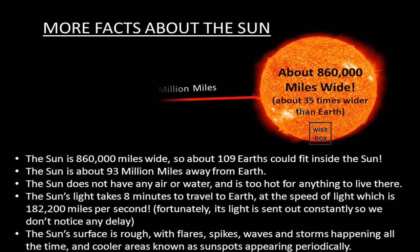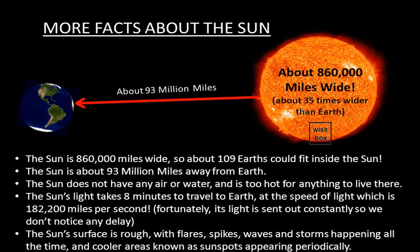It is about 93 million miles away from the Earth. The Sun does not have any air or water and is too hot for anything to live there.